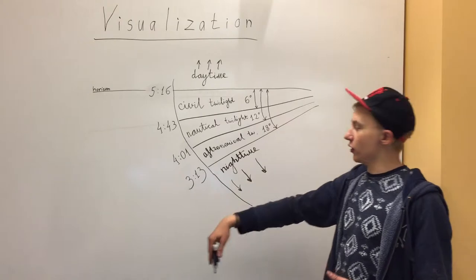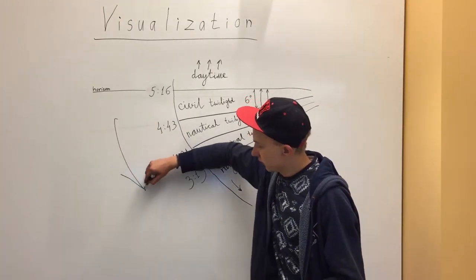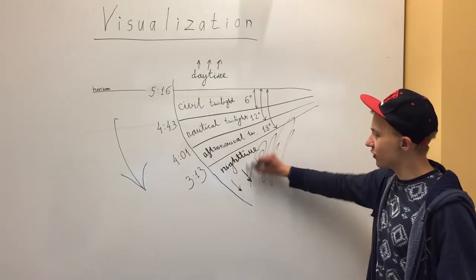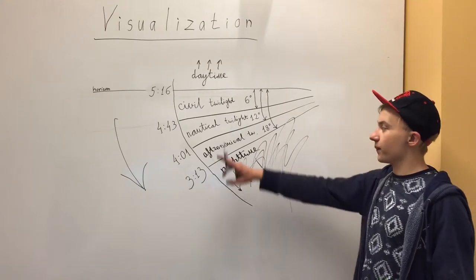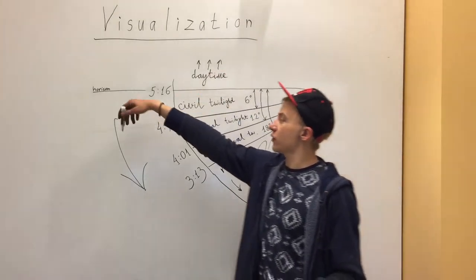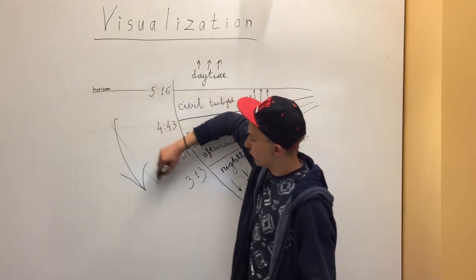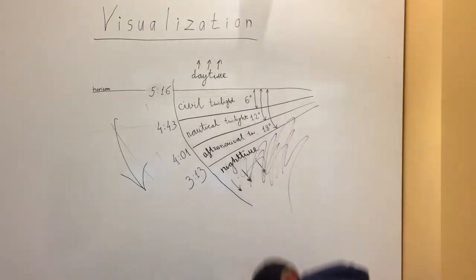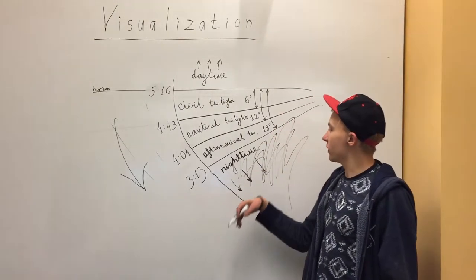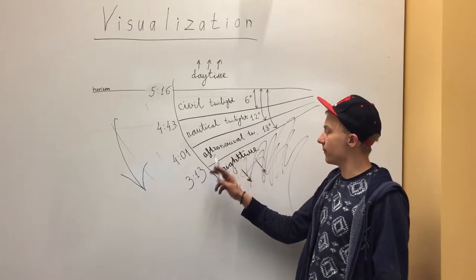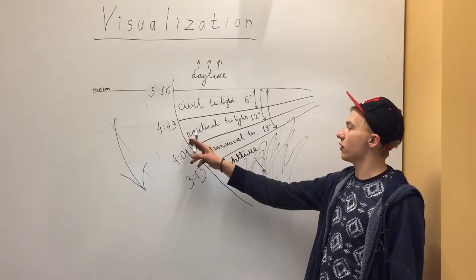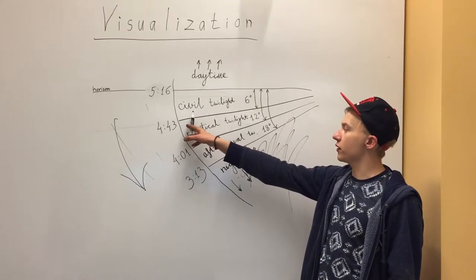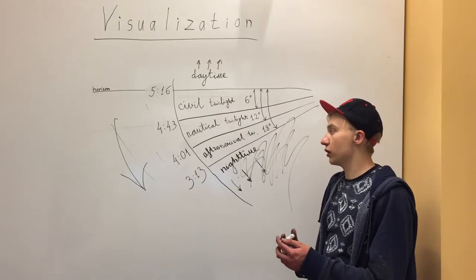Given that the Earth moves, we are first in the night time — really, really dark, only darkness. Then the lights of the sun start to approach the surface of the Earth more and more as time goes by. At 3:13 we start astronomical twilight, which we don't actually see. Then at 4:01 we start nautical twilight, which we can see on the sky. And at 4:43 we start civil twilight, which is pretty clearly seen.